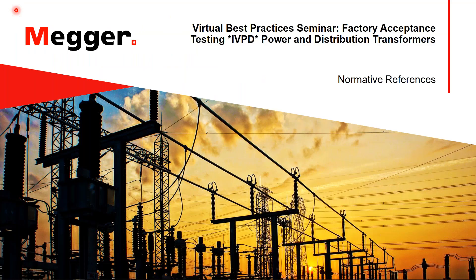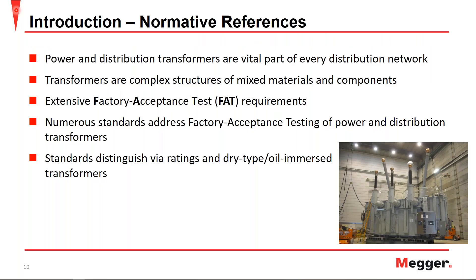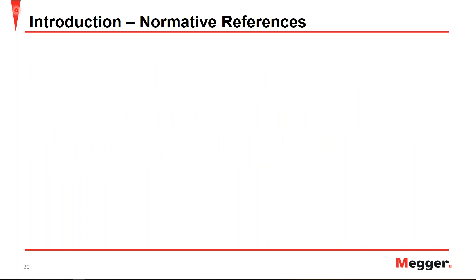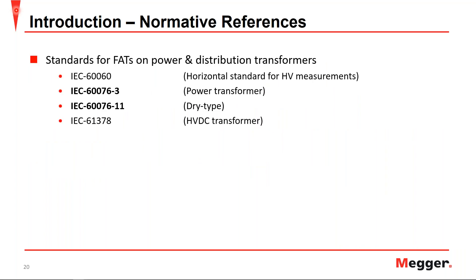Power and distribution transformers are a vital part of every distribution network and are complex structures of mixed materials and components that ultimately result in an RLC — resistive, inductive, and capacitive — network within themselves. There are extensive factory acceptance test requirements and numerous standards that address factory acceptance testing for power and distribution transformers, distinguishing between ratings as well as dry type and oil immersed transformers. Here we have a list of the most relevant standards.